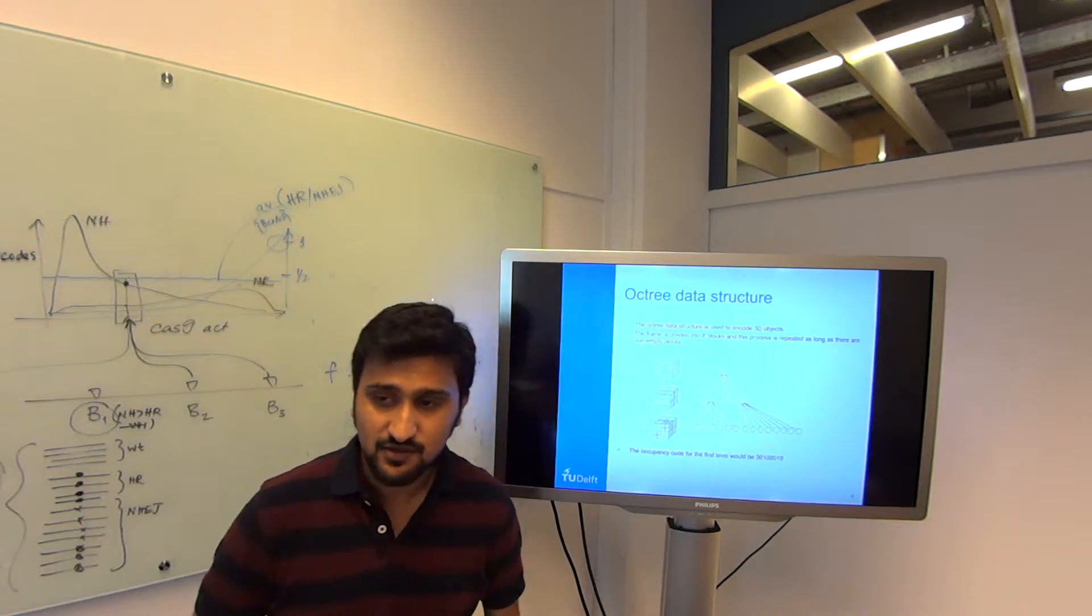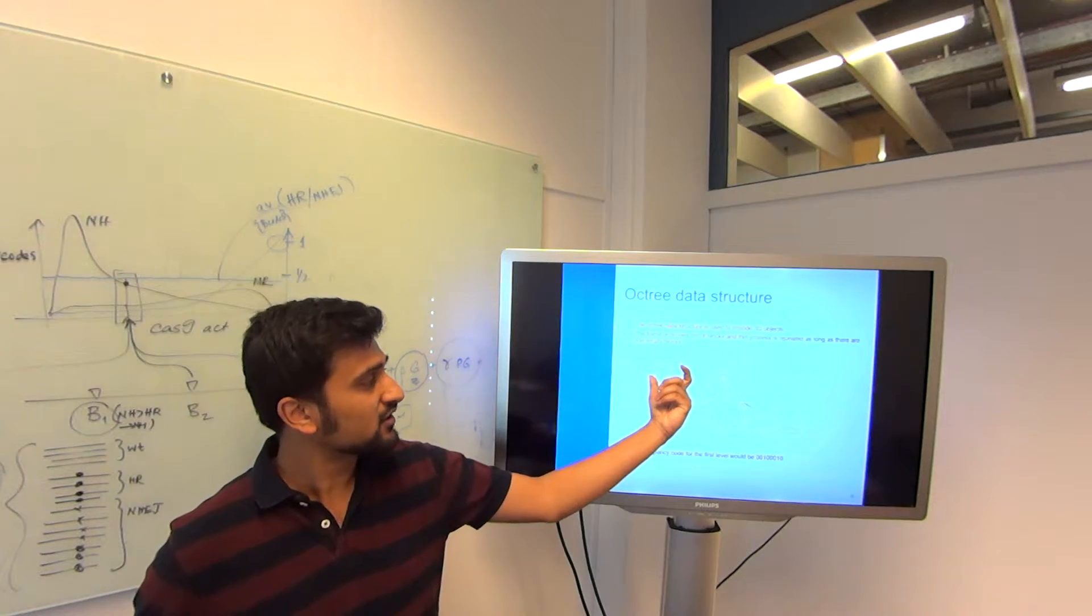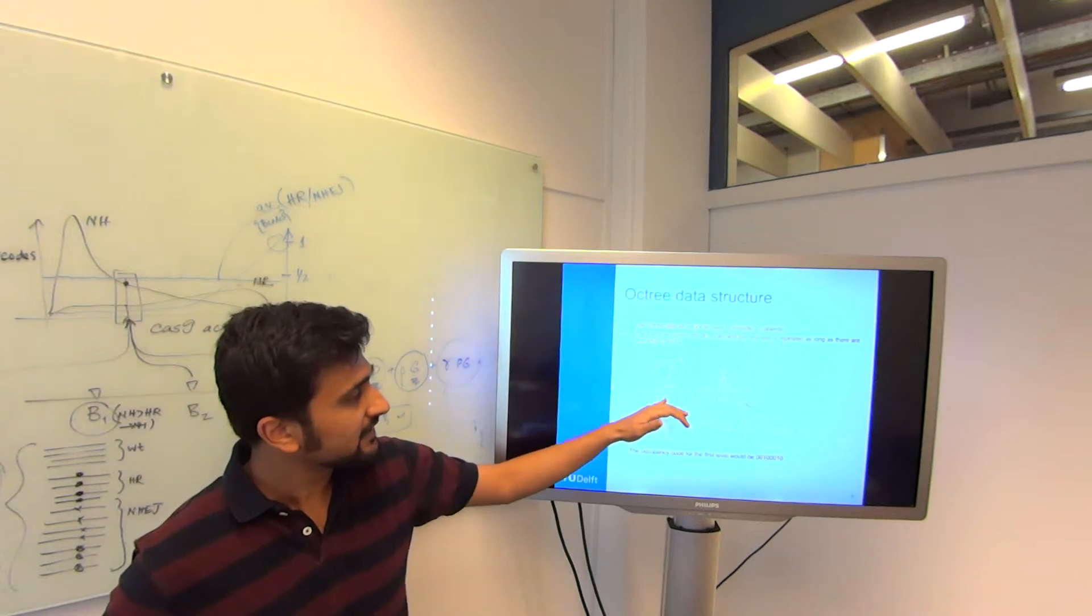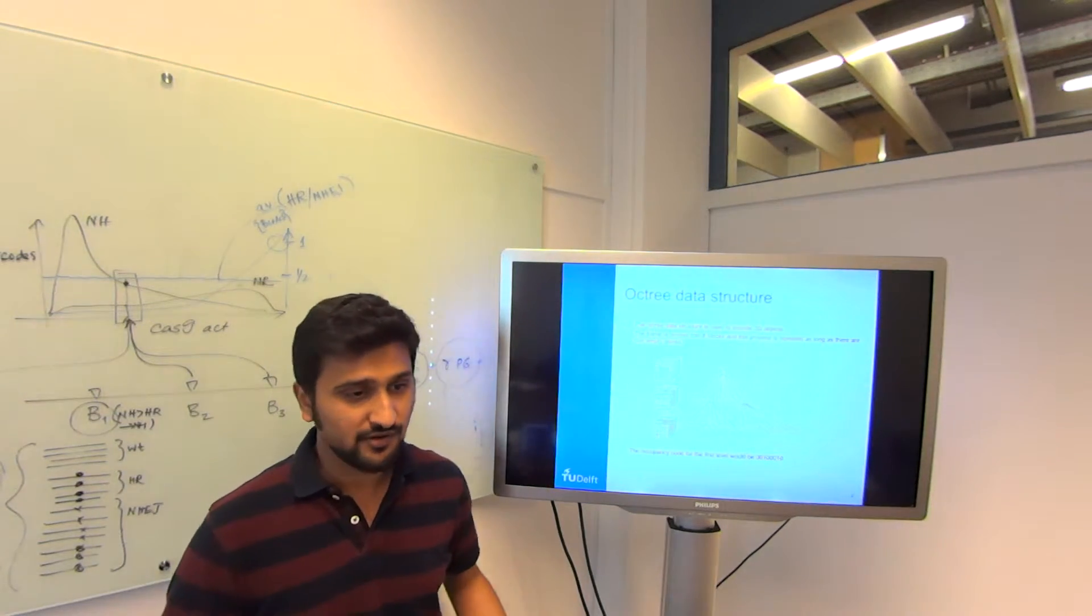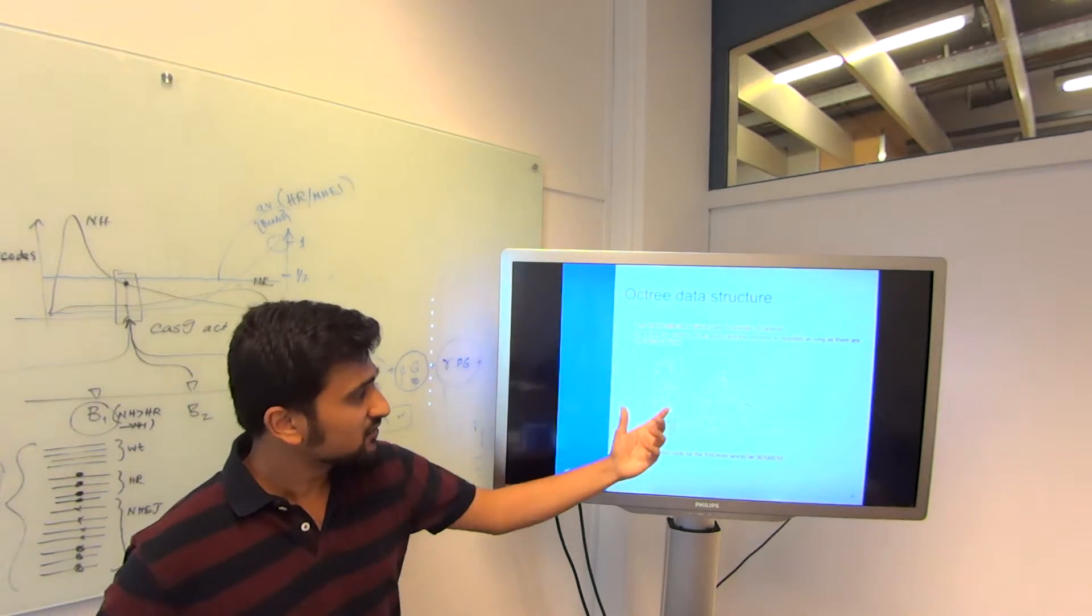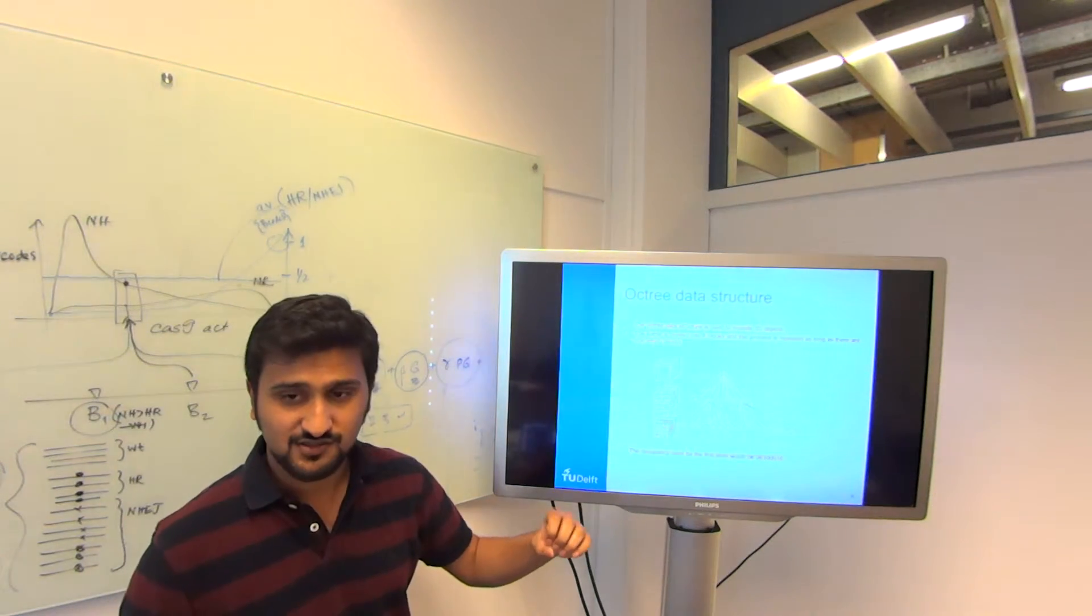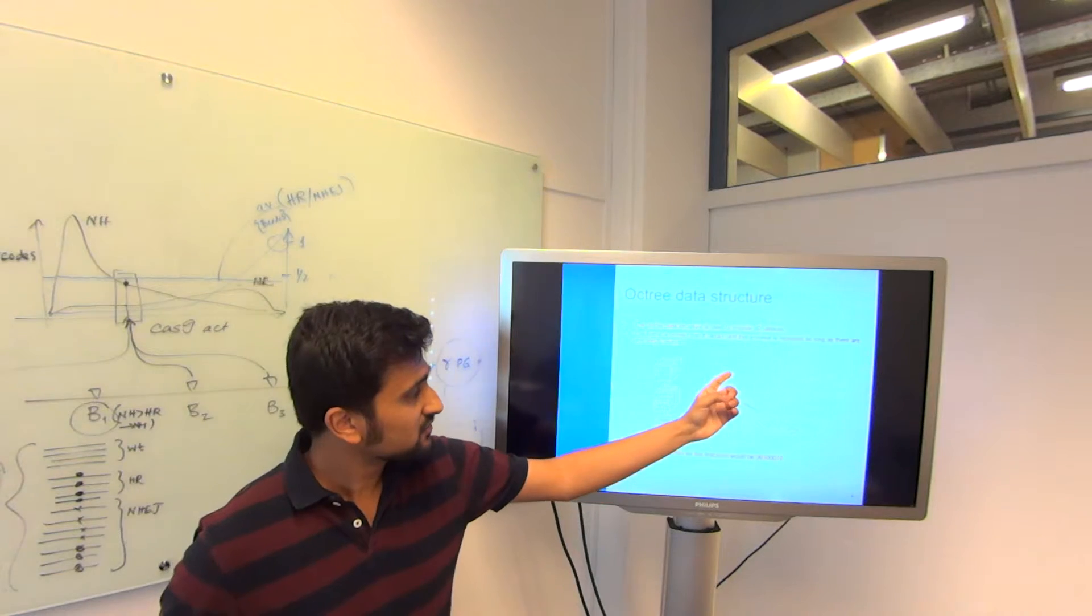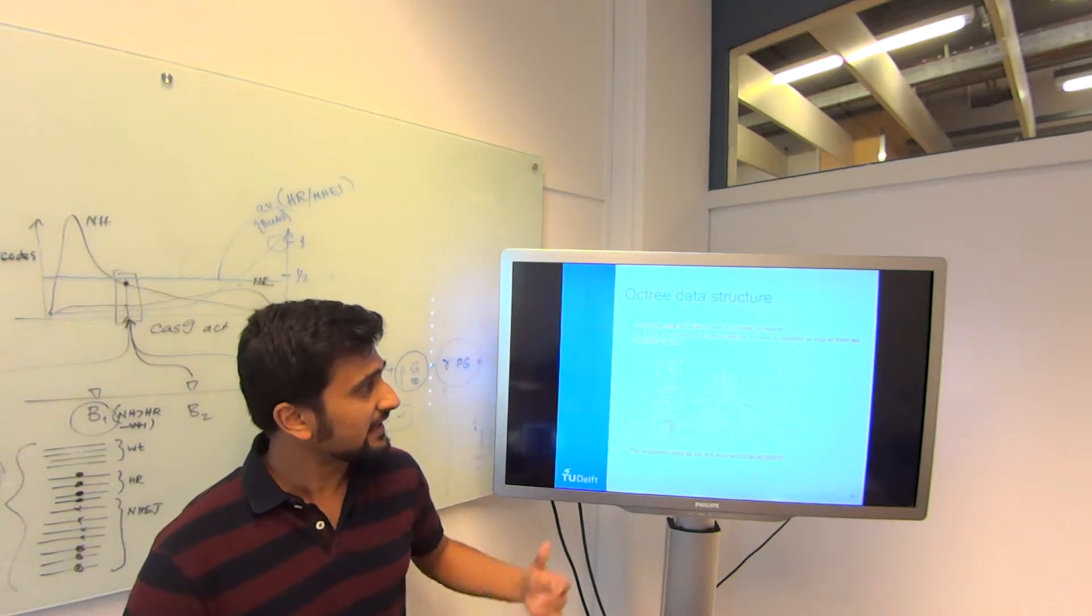A popular data structure that they use is the octree. Basically how this works is you take a bounding box around your frame and you keep dividing it into eight parts. This is like a 3D version of the 2D quad tree. You keep dividing it as long as you don't have any empty cells or a cell which does not have a voxel in it. You could also visualize it as a tree as it's shown here.